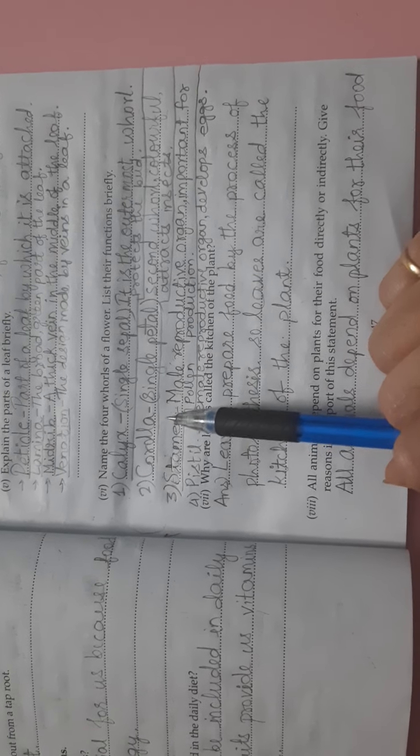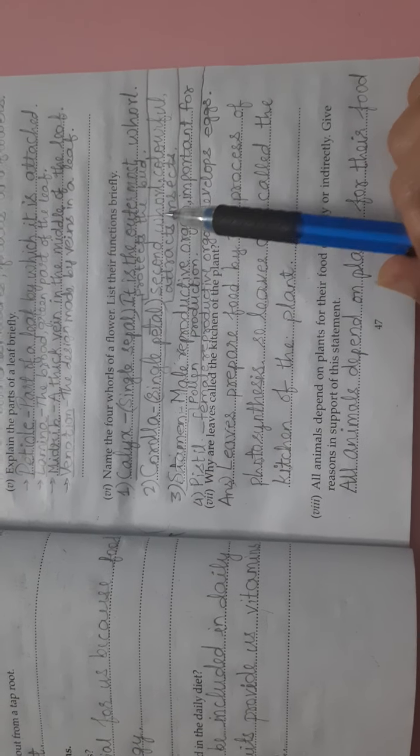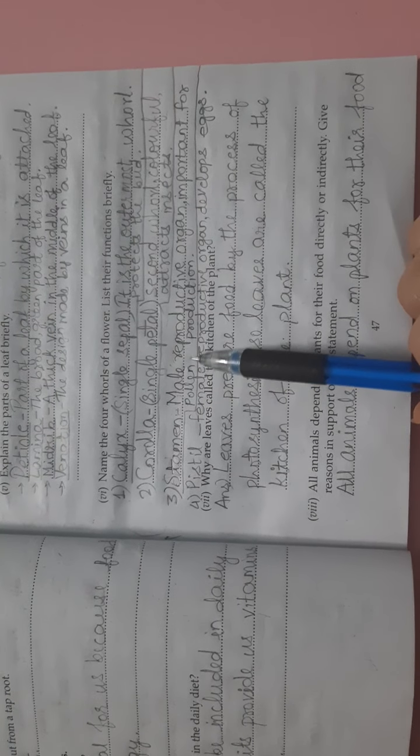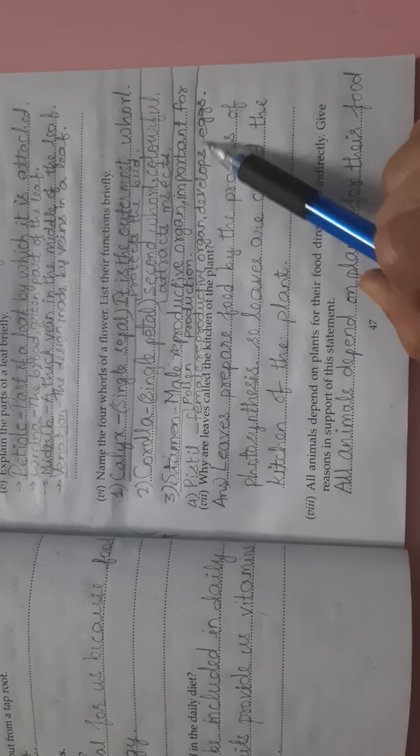Second is corolla, its singular is petal. Second whorl, colorful and attracts insects. Third, stamen, male reproductive organ, important for pollen production. Fourth is pistil, female reproductive organ, and it develops eggs.